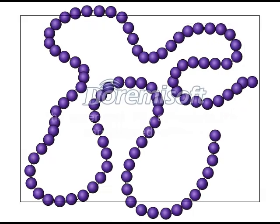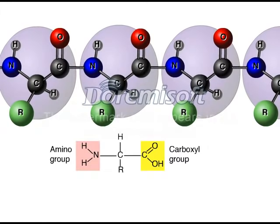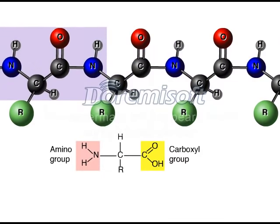This illustration shows some of the amino acids making up the primary structure of a protein. The structure of a single generalized amino acid is shown below. The main backbone of every amino acid is the same. This is what forms the backbone of the polypeptide chain.